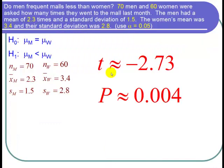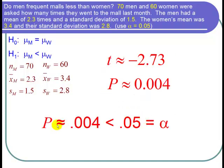So we had a test statistic t, which was about negative 2.73. And a p-value, which was about 0.004. And I will use a method of p-values for this particular problem. So the p-value, which is about 0.004, is less than 0.05, the level of significance alpha.